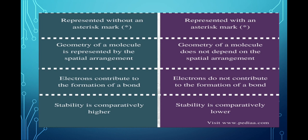Bonding molecular orbitals are represented without an asterisk mark, which is a type of star mark. Anti-bonding molecular orbitals are represented with an asterisk mark.